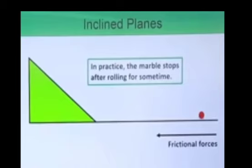From this entire experiment, Galileo concluded that it is a tendency of a body to oppose any change in its state of motion or rest. If the body is at rest, it tends to maintain that state and resists any change. If the body is already in motion, its tendency is to maintain that same state of motion. This tendency of the body has a particular name: inertia. Inertia is the property of any body to oppose any change in its state of motion or rest.